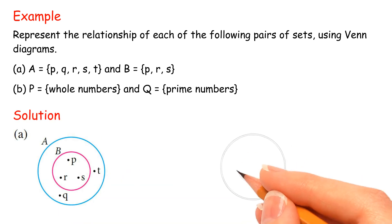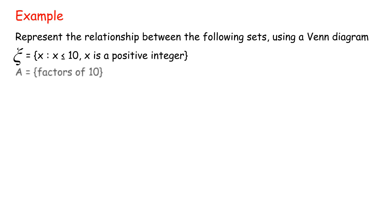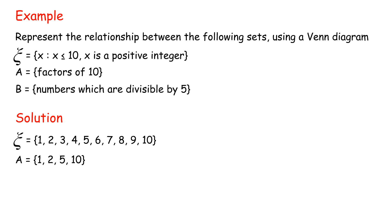Solution. Example: represent the relationship between the following sets using a Venn diagram. Universal Set = {x | x ≤ 10, x is a positive integer}, A = {factors of 10}, B = {numbers which are divisible by 5}. Universal Set = {1, 2, 3, 4, 5, 6, 7, 8, 9, 10}. A = {1, 2, 5, 10}. B = {5, 10}.